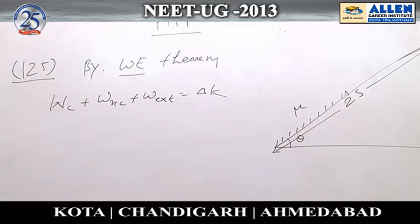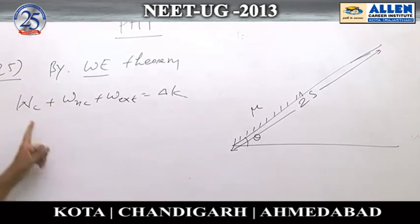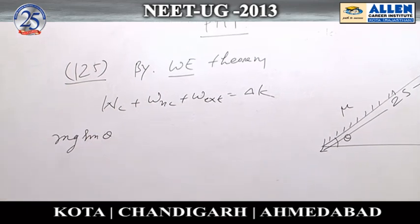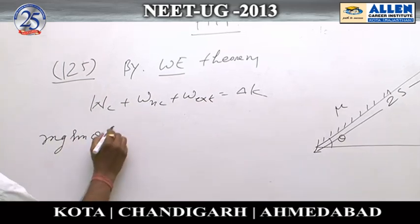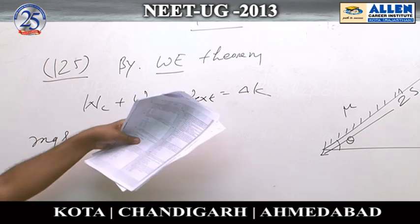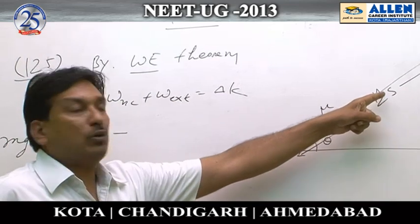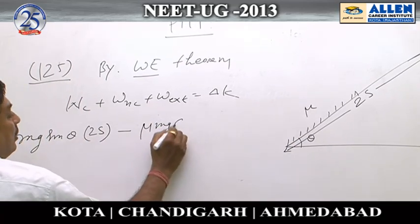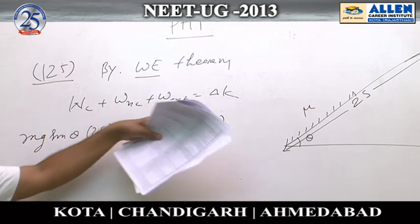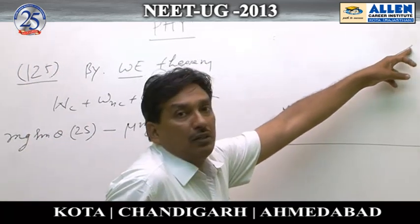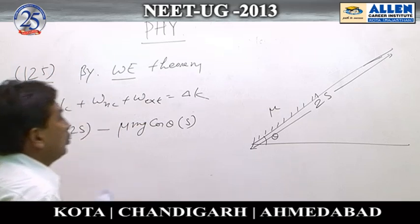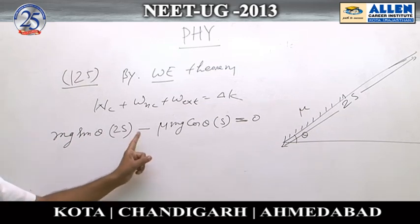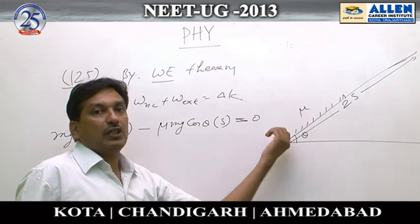The block is starting from rest at the top. Work done by conservative forces — gravitational force Mg sin theta along the incline — over total displacement 2s, minus work done by non-conservative forces, which apply only on the rough half, so minus mu Mg cos theta into s. There is no external force, and since the block starts from rest and finally comes to rest, the change in kinetic energy equals zero. The minus sign is due to friction acting up the incline while the block comes down.